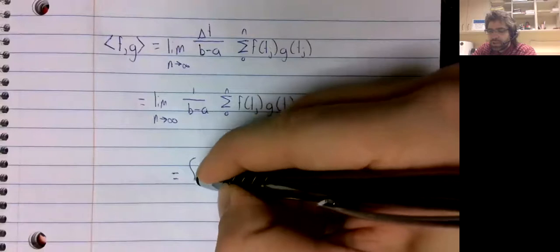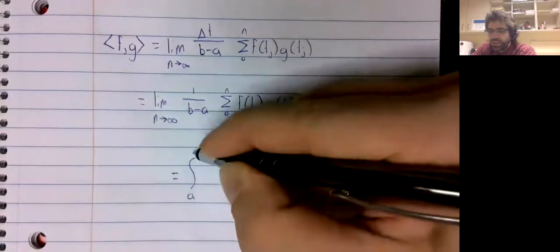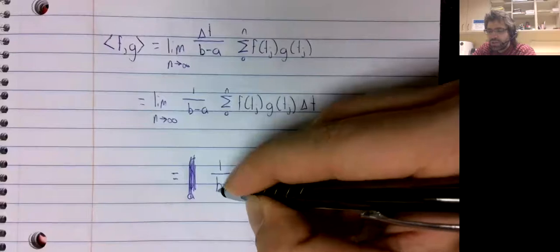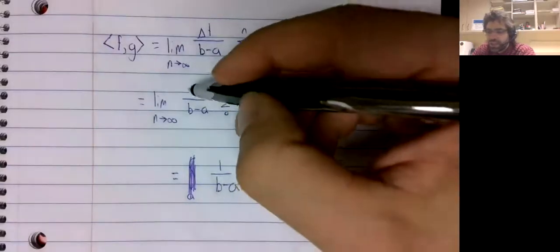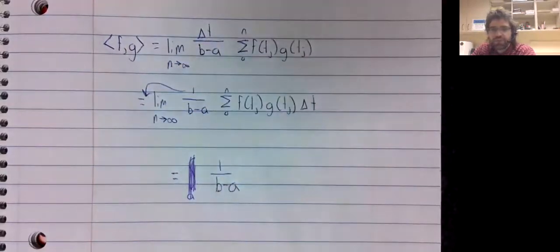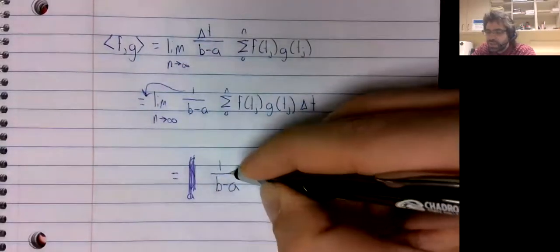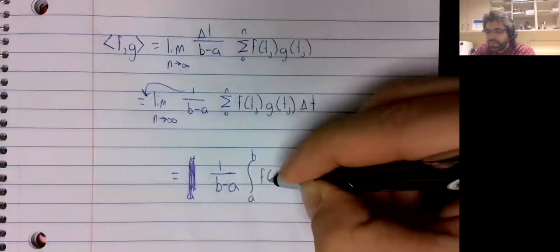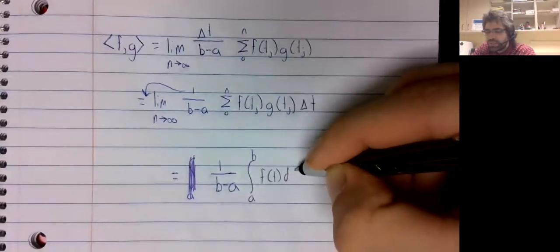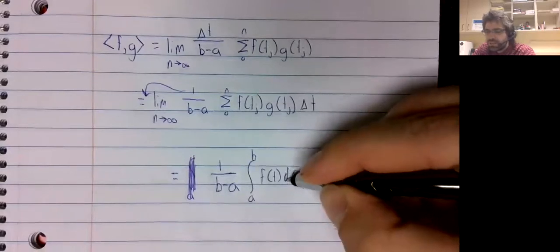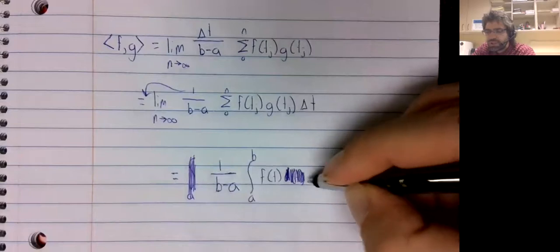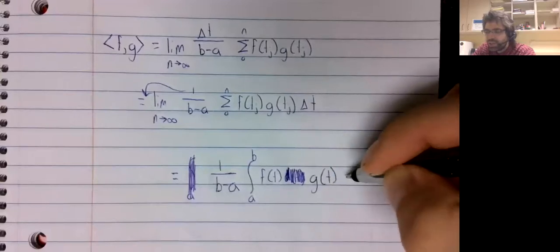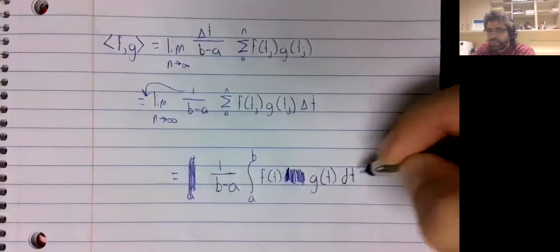And the limit as n goes to infinity, let me not forget this one divided by b minus a, it's constant, it can come in front of the limit times the integral from a to b of f of t times g of t dt.